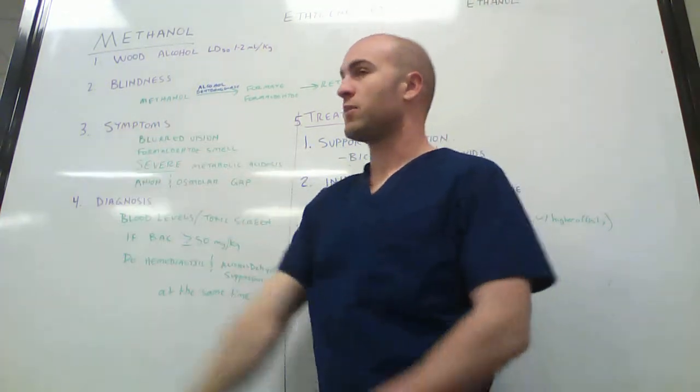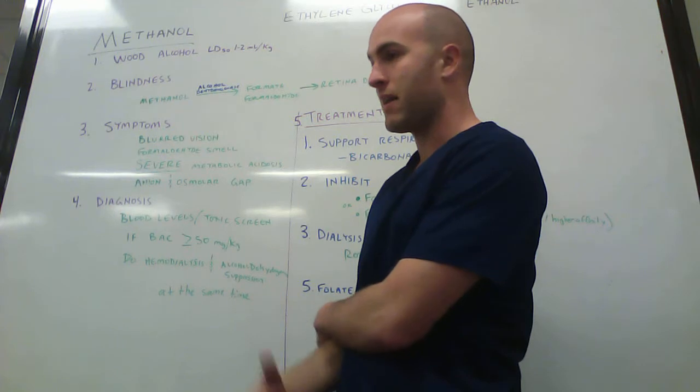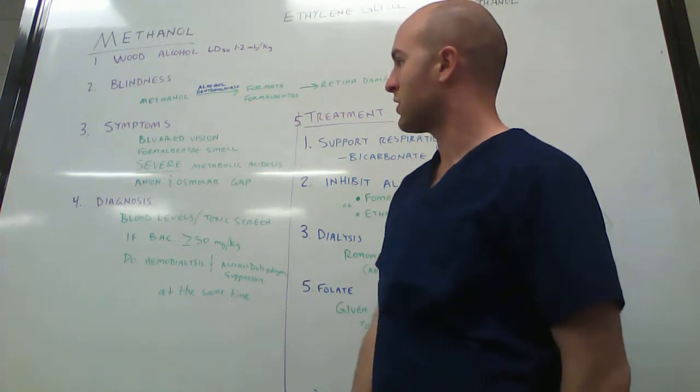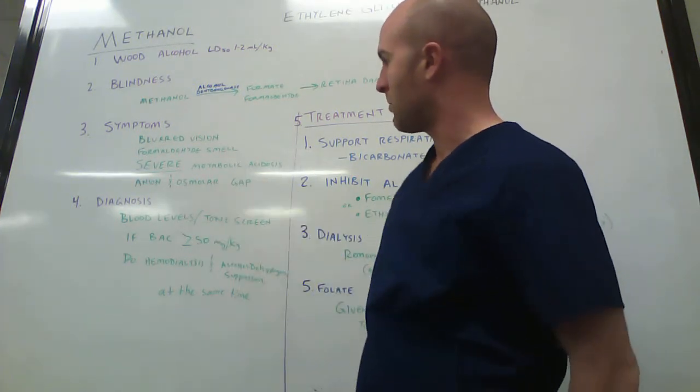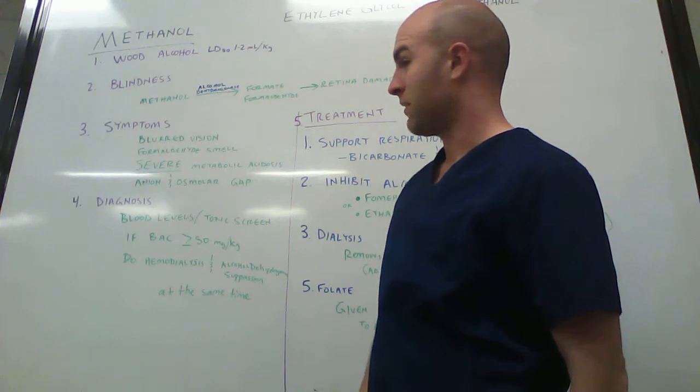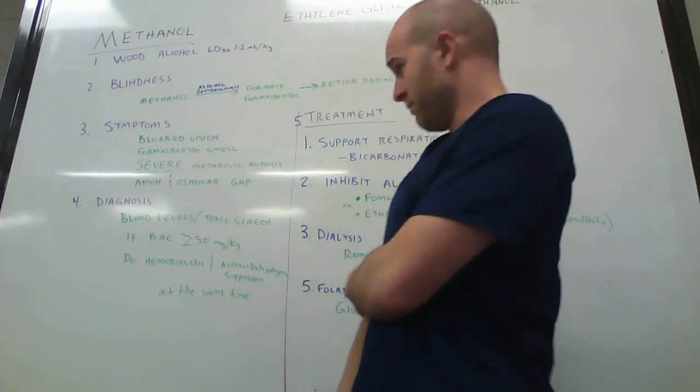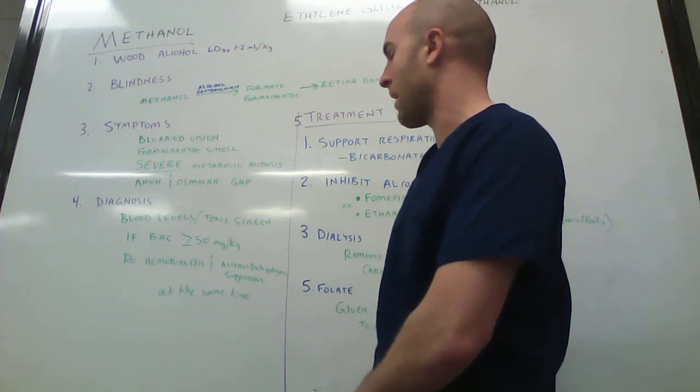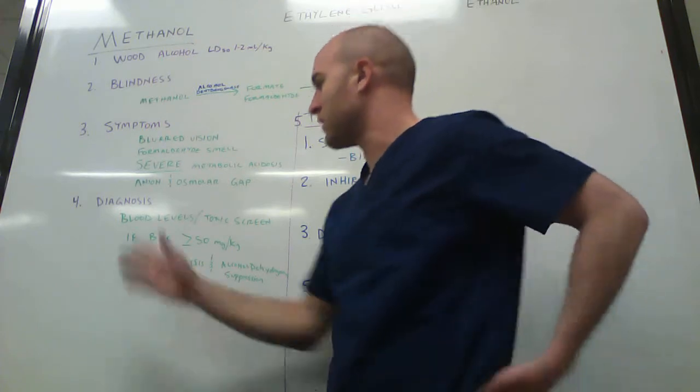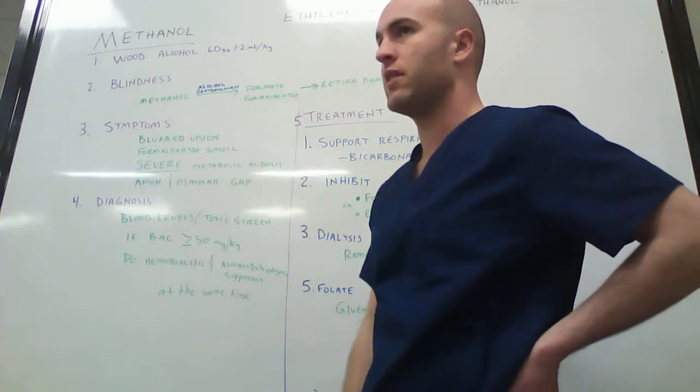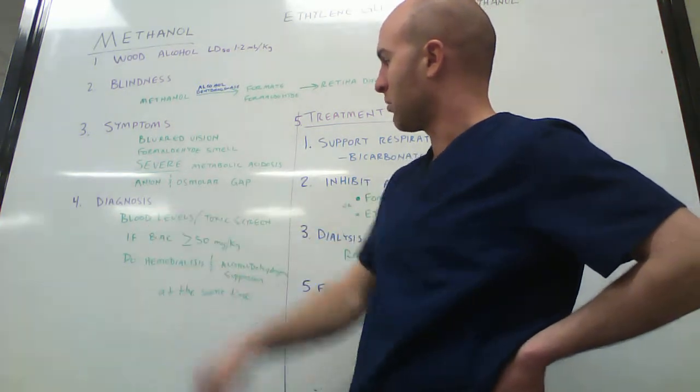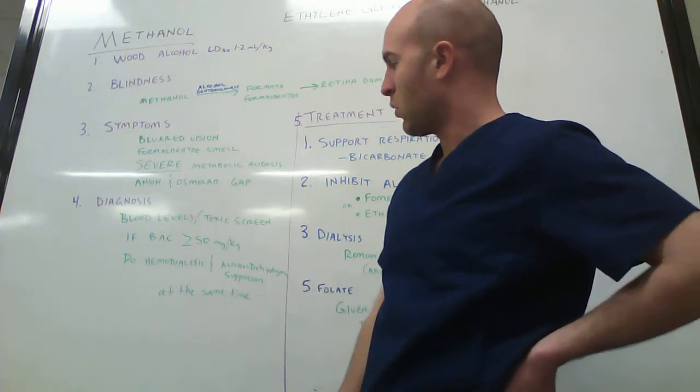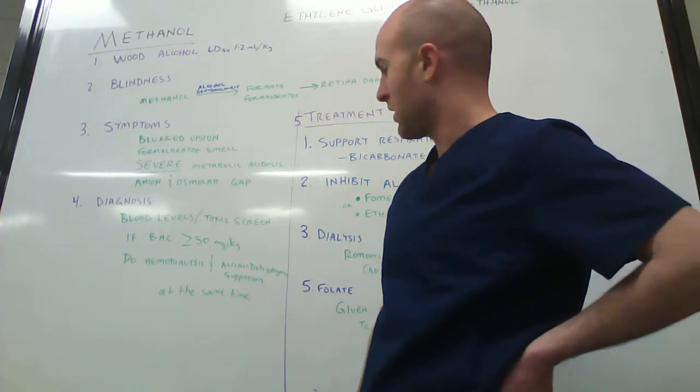The symptoms: if somebody comes into your office, they might be totally fine mentally. Their mental status would be fine, but they would have blurred vision. They would have a slight formaldehyde smell maybe, and you'd find, if you were to test their blood, that they have severe metabolic acidosis, an anion and osmolar gap. This would lead you to want to get a sure diagnosis by taking their blood levels and doing a toxic screen on them.